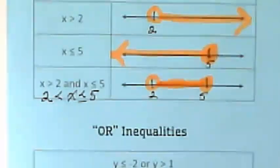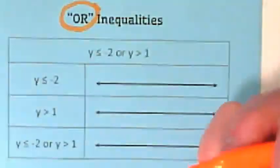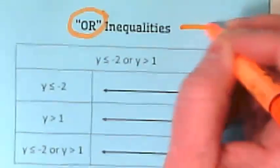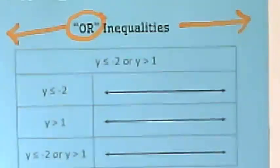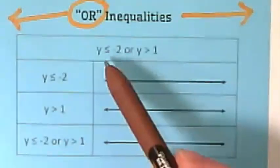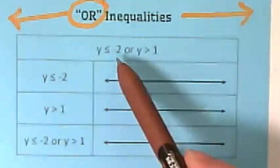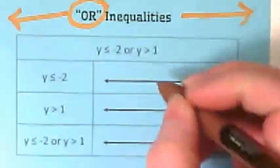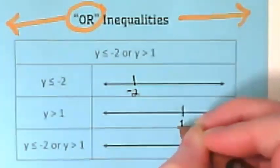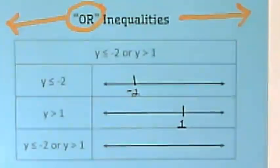So those are 'and' inequalities when we're dealing with compounds. And then we have 'or' inequalities. Rather than joining in between two points on a graph, 'or' inequalities go both directions, away from each other. So here we have y is less than or equal to negative 2, or y is greater than 1. So we're going to put the negative 2 here and the 1 here. And then on the bottom number line, we're going to get them both on there together.